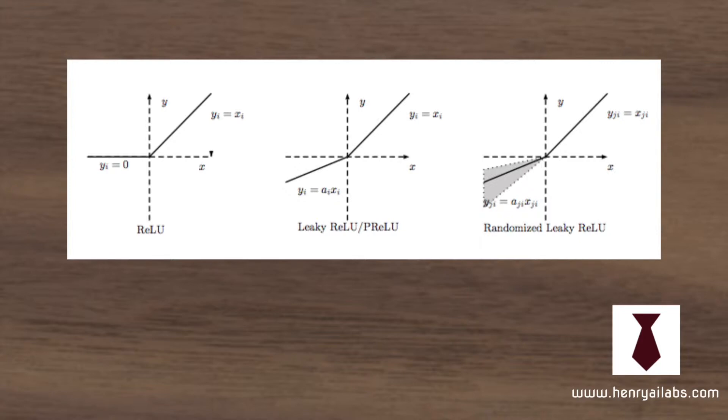On the far right is the interesting idea of randomized slope values. As the model runs through the data, it randomly samples slope values for the activations from some distribution.